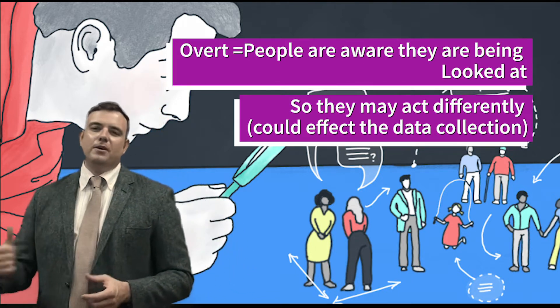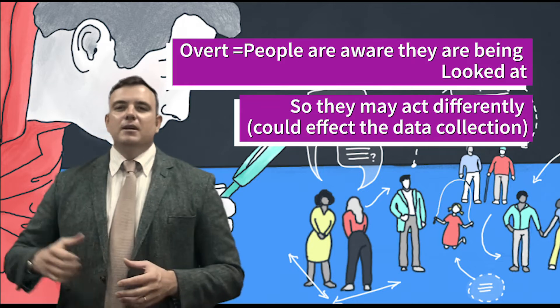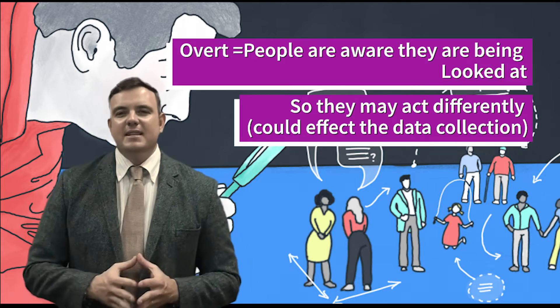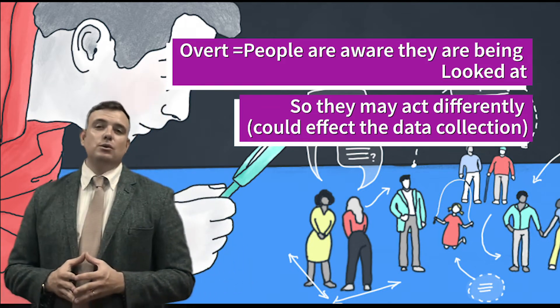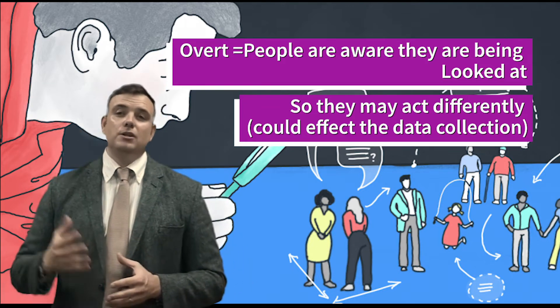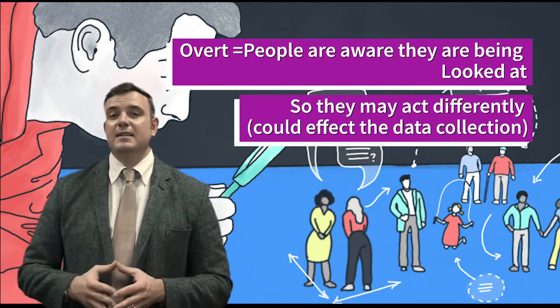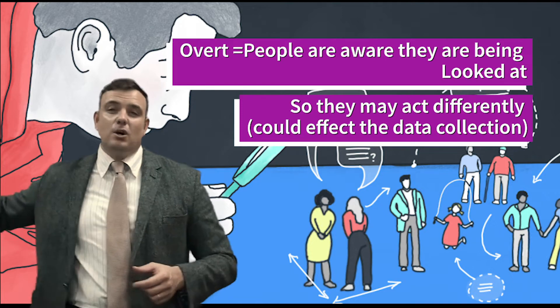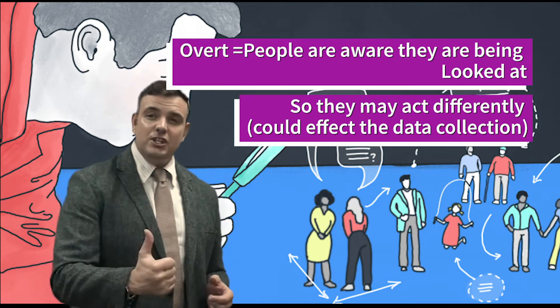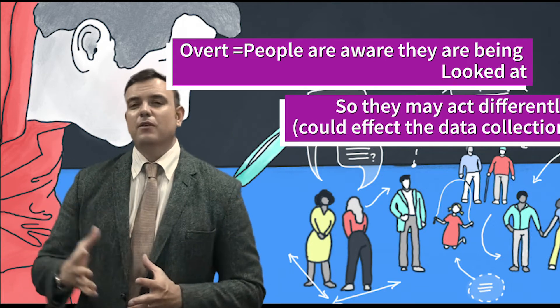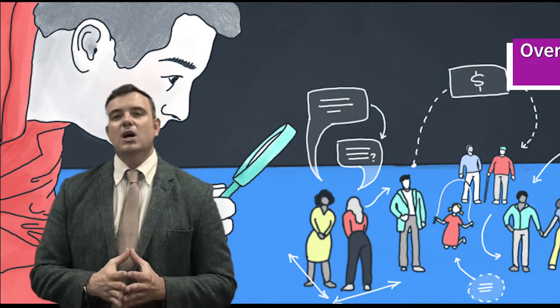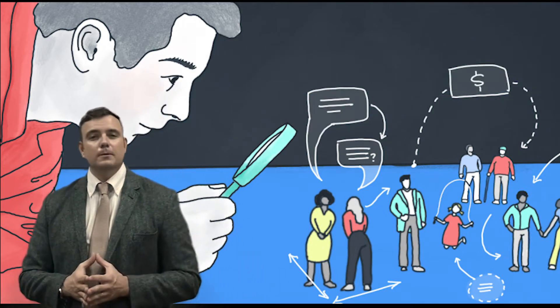They may not behave in a natural way because they know they're being looked at by other people. And that's the first primary data collection tool that you can use for collecting data — observation. Now let's move on to the second one.